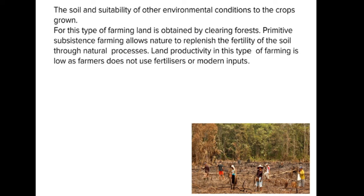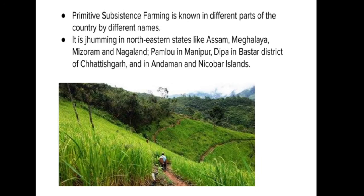This farming is known by different names in different parts of India. It is called Jhumming in northeastern states like Assam, Meghalaya, Mizoram, and Nagaland. In Manipur, it is known as Pamlou. In the Bastar district of Chhattisgarh and in the Andaman and Nicobar Islands, it is known as Deepa.